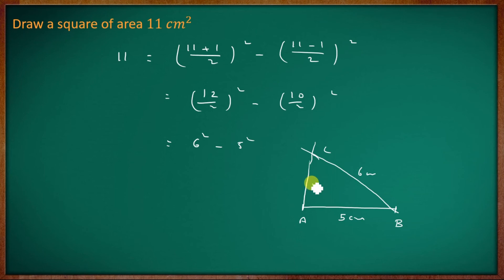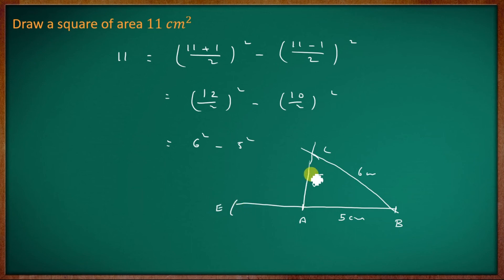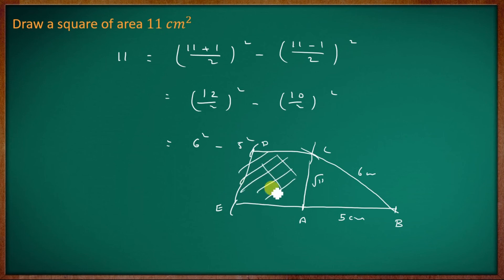This is the way to construct root 11. I'm going to use root 11 — if you find root 11, that side will emerge. Then you can use it to construct a square completely. That length is called AC. By the name of C, this is point D.